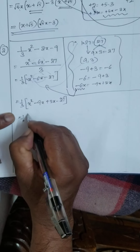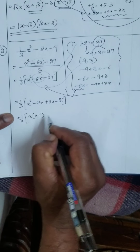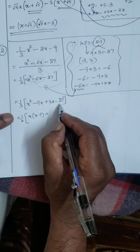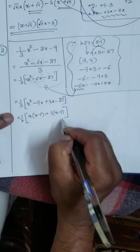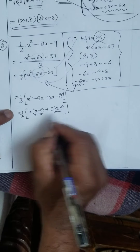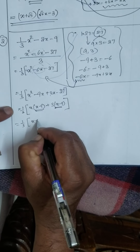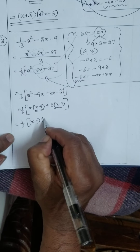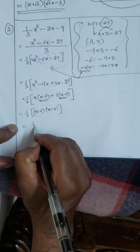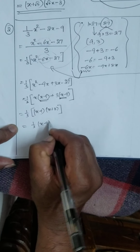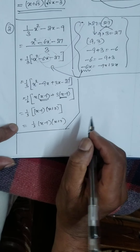Then 1/3 — here, which is the common factor? x is the common factor: x(x minus 9). Here 3 is the common factor — because if I take 3 out, I get (x minus 9). Now x minus 9, x minus 9 — you take this as common factor. Therefore the answer is: 1/3 · (x minus 9)(x plus 3). This is the factorized value.